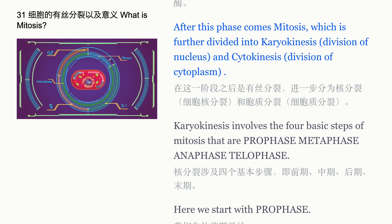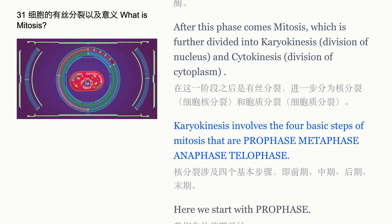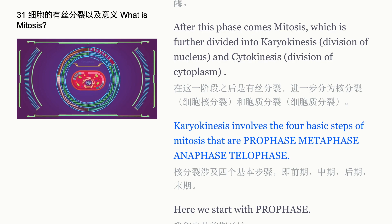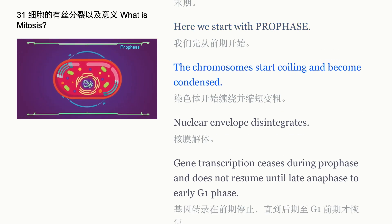After interphase comes mitosis, which is further divided into karyokinesis — division of the nucleus — and cytokinesis — division of the cytoplasm. Karyokinesis involves the four basic steps of mitosis: prophase, metaphase, anaphase, and telophase. Here we start with prophase.